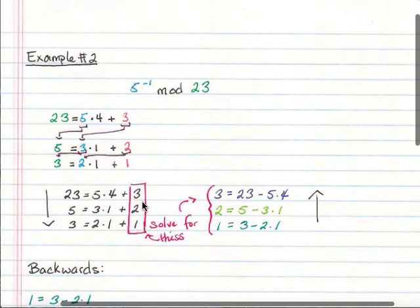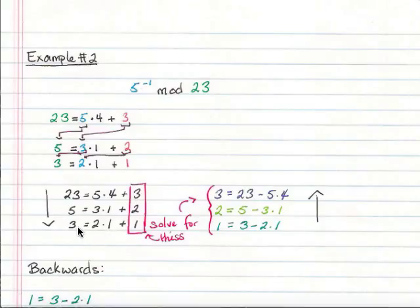And the next step is to solve for each of these remainders. So I literally just rewrote it and moved the like 2 times 1 over to this side of the equation. So you can see each of these has been rewritten to solve for the remainder.